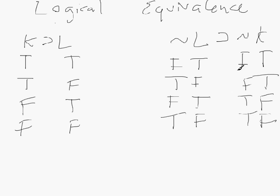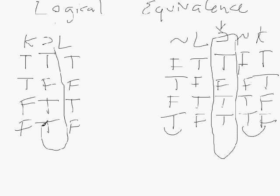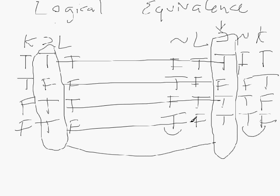Using the conditional rule on ¬L→¬K, I'm circling the truth column under the main operator: true false true true. Comparing line by line with K→L — true matches true, false matches false, true matches true, true matches true. These two expressions are logically equivalent — they really mean the same thing. That's an example of logical equivalence.